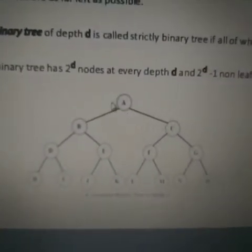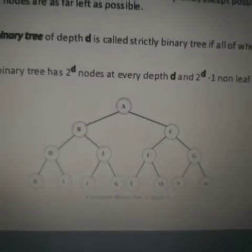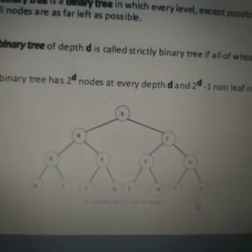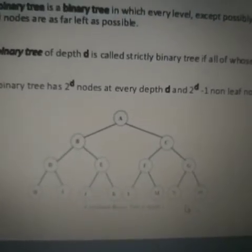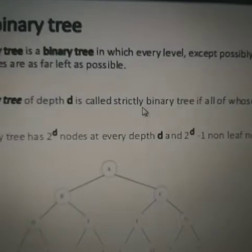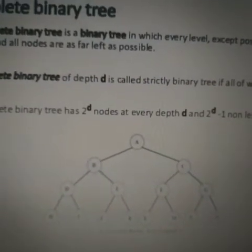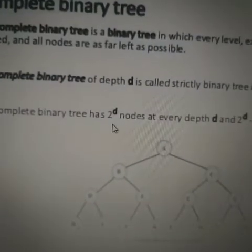A binary tree of depth d is called strictly binary tree if all of whose leaf nodes are at level d. If all the leaf nodes are at this level - this is level zero, this is level one, level two, and level three. At level three all the leaf nodes are present, we call it strictly binary tree.